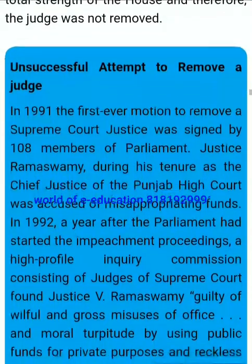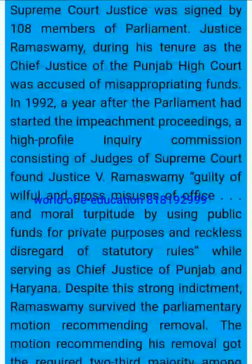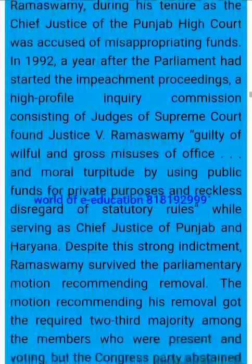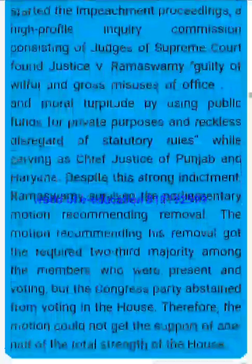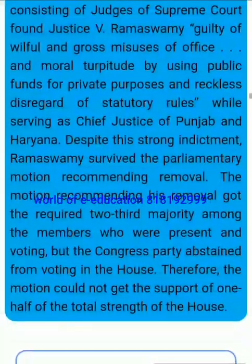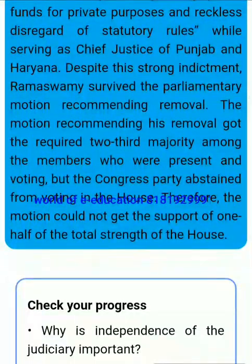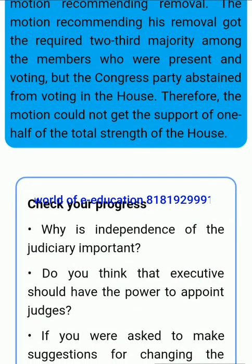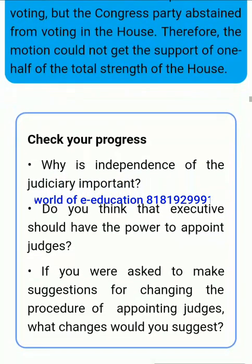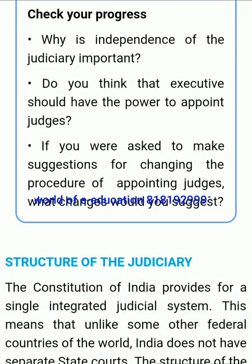Only one case of removal of a judge of the Supreme Court came up for consideration before Parliament. In that case, though the motion got a two-thirds majority, it did not have the support of the majority of the total strength of the House, and therefore the judge was not removed. In 1991, the first-ever motion to remove a Supreme Court justice was signed by 108 members of Parliament. Justice Ramaswamy, during his tenure as Chief Justice of the Punjab High Court, was accused of misappropriating funds. In 1992, a high-profile inquiry commission found Justice Ramaswamy guilty of willful and gross misuse of office. Despite the strong indictment, Ramaswamy survived the parliamentary motion because the Congress Party abstained from voting, so the motion could not get the support of one-half of the total strength of the House.